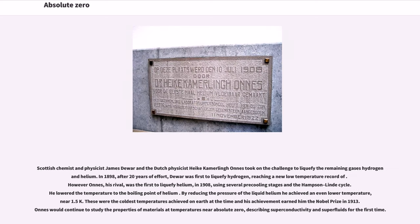Scottish chemist and physicist James Dewar and the Dutch physicist Heike Kamerlingh Onnes took on the challenge to liquefy the remaining gases hydrogen and helium. In 1898, after 20 years of effort, Dewar was first to liquefy hydrogen, reaching a new low-temperature record of 20 Kelvin. However Onnes, his rival, was the first to liquefy helium, in 1908, using several pre-cooling stages and the Hampson-Linde cycle. He lowered the temperature to the boiling point of helium.